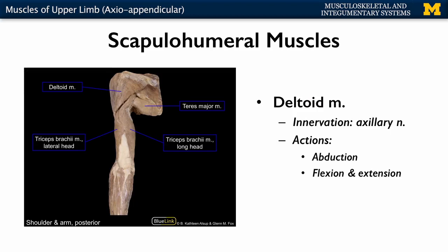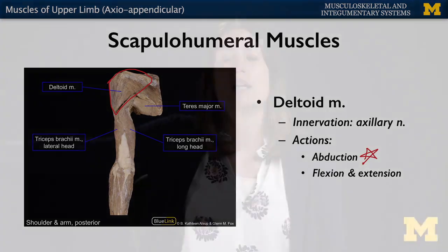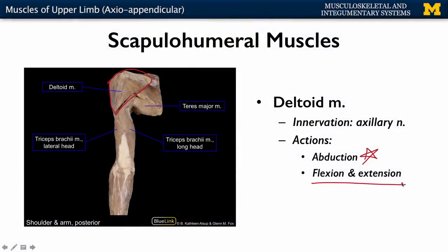The deltoid muscle is going to be that cap you can see on the top — a very thick, very robust muscle. It's an area of intramuscular injection, so if you think of where you get your shots, oftentimes it's in the deltoid. The main role of the deltoid muscle is abduction — it is going to do the majority of abduction of the shoulder joint, so think about moving your arm this way. But different areas of the deltoid, so different muscle fibers, can also play a role in terms of flexion and extension of the shoulder joint. It's going to be innervated by one of the terminal branches of the brachial plexus, your axillary nerve.